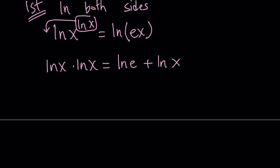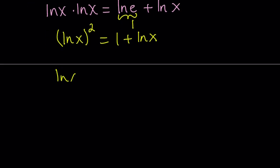Quick note, ln e is log e with base e. It's equal to 1. And ln x multiplied by ln x is basically ln x squared. So this gives us the following equation which can actually be turned into a quadratic. So let's go ahead and write it this way. ln x squared minus ln x minus 1 equals 0.